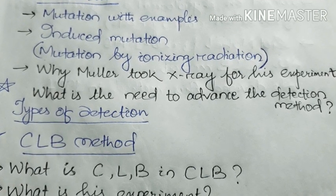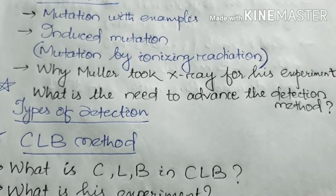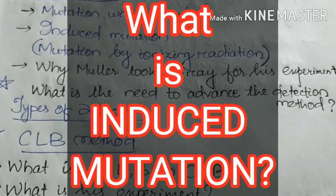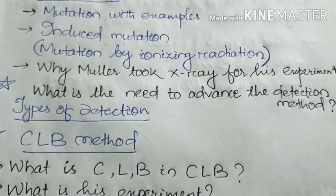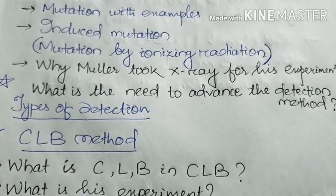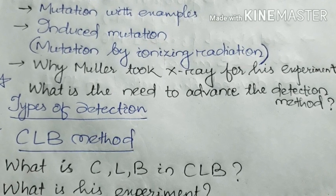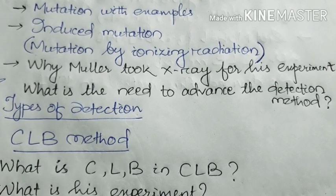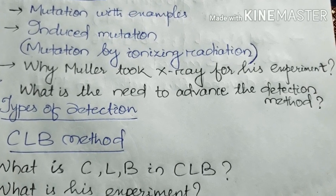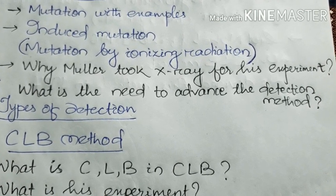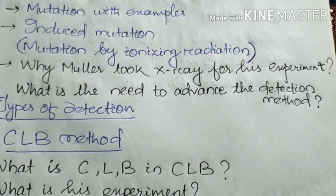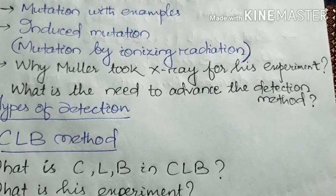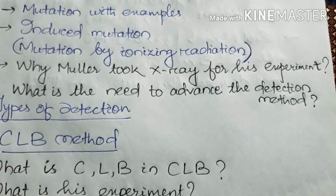Now, the second point: induced mutation, or mutation by ionizing radiation. Induced mutation is that type of mutation which is induced in a variety of ways, such as exposure to UV rays, ionizing radiations like X-rays and gamma rays, or chemical mutagens.